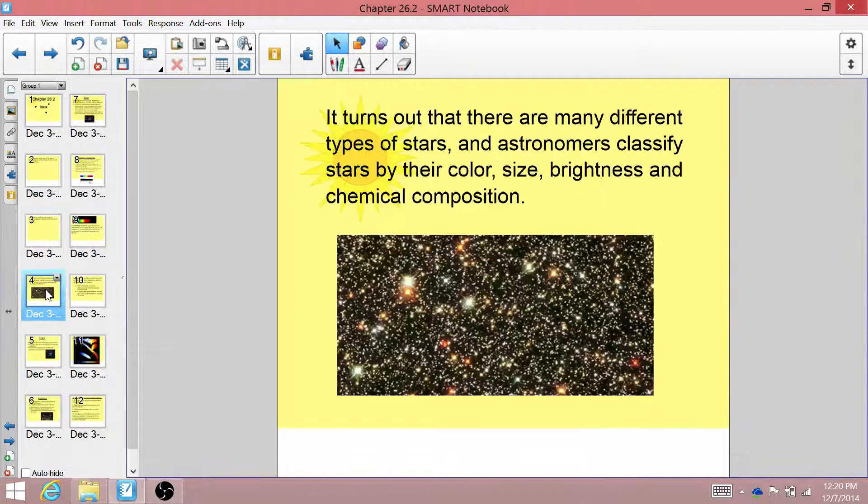But once we find out how far away stars are, we can then classify the stars. And there are many different types of stars. We classify stars based on color, size, brightness, and chemical composition, what they're made out of.